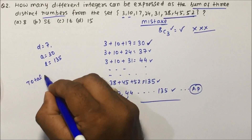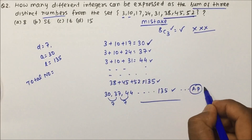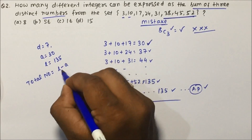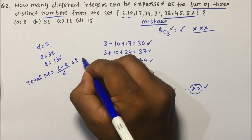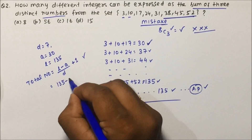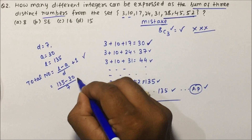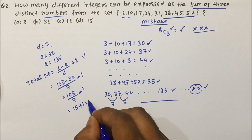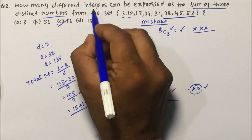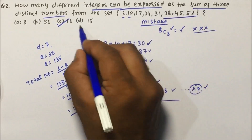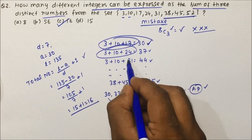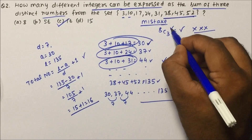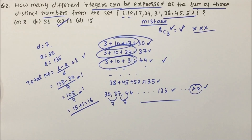So: (135 − 30) / 7 + 1 = 105 / 7 + 1 = 15 + 1 = 16. There are 16 different integers that can be expressed as the sum of three distinct numbers from the set. This is a simple question, but in exams you should not make the mistake of calculating combinations instead of using the AP formula.